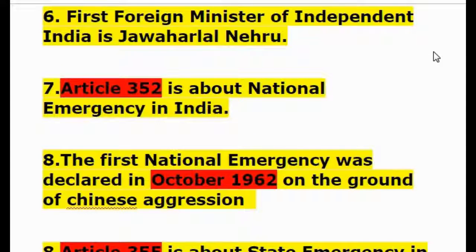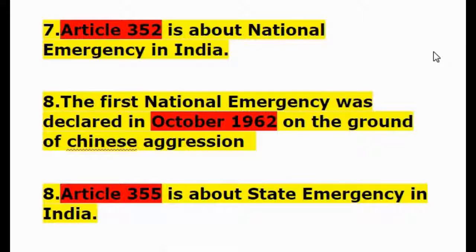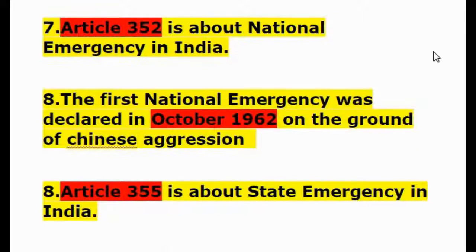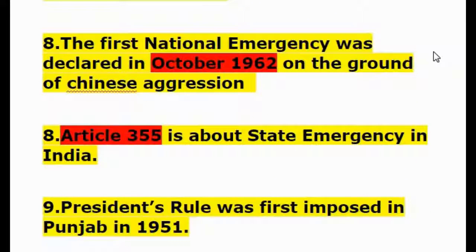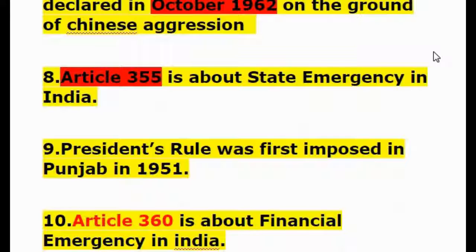Question 7: Article 352 is about national emergency in India. The first national emergency was declared in October 1962 on the ground of Chinese aggression. Question 8: Article 355 is about state emergency in India.